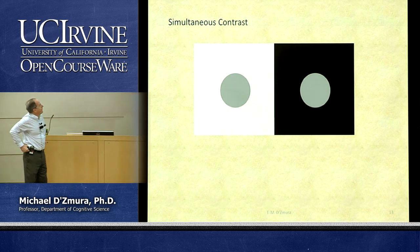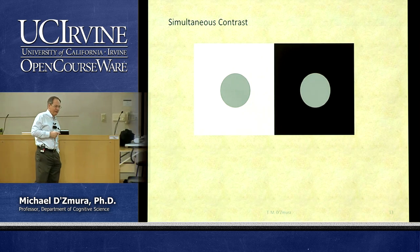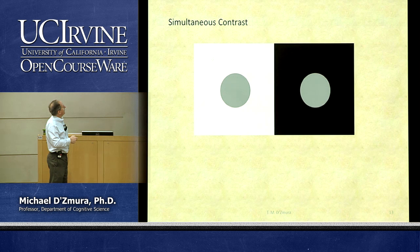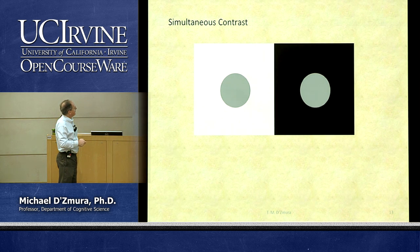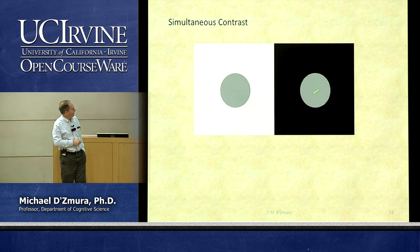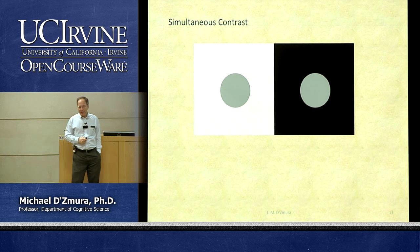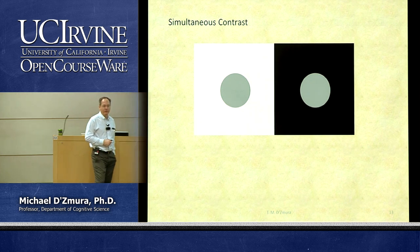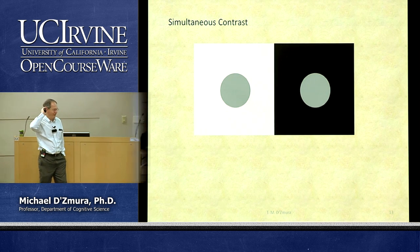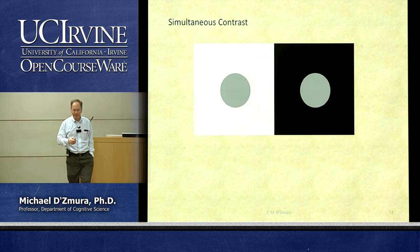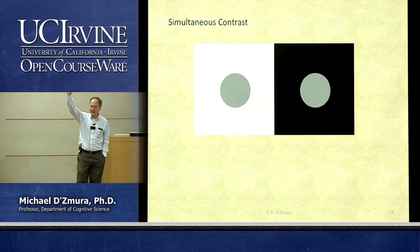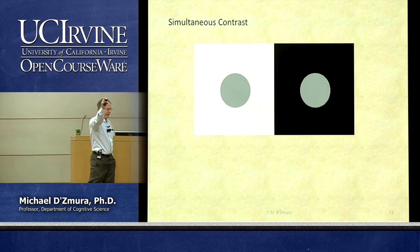To prove that the visual system accentuates differences, consider the famous visual illusion of simultaneous contrast. We have a white background on the left with a gray disc, and a black background on the right. From the physical point of view, the gray on the left disc is physically identical to the gray on the right. But they do not look the same — most people agree the left disc looks a little darker and the right disc looks a little brighter.